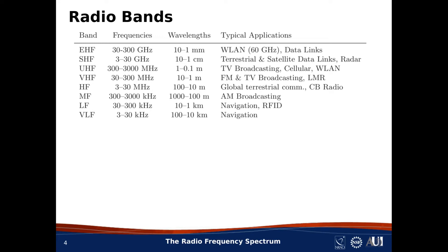Other bands include MF, LF, and VLF — all at frequencies below 3 MHz. I'm not going to comment further on these, because these bands have very specialized applications and radio-astronomical uses of these bands is extremely limited. One final thing to mention is that frequencies between 300 MHz and 300 GHz — that is, UHF through EHF — are commonly referred to as microwave frequencies. That's essentially a label for radio bands which have a wavelength less than about 1 m.